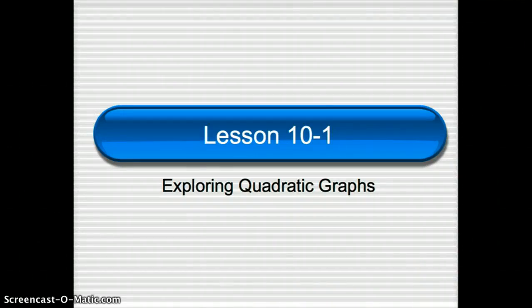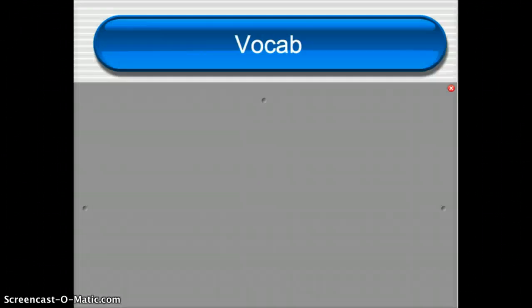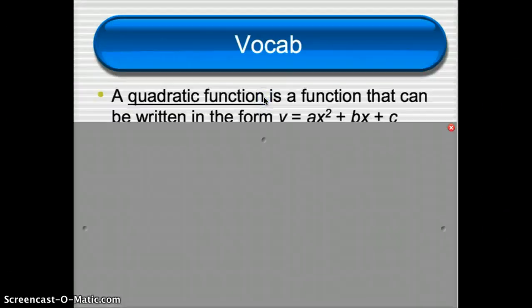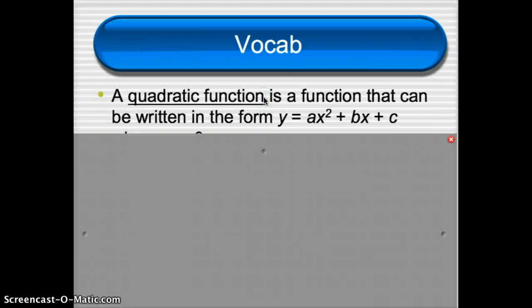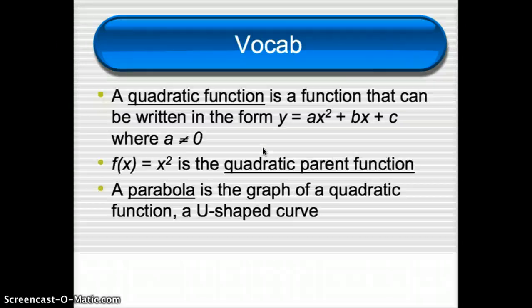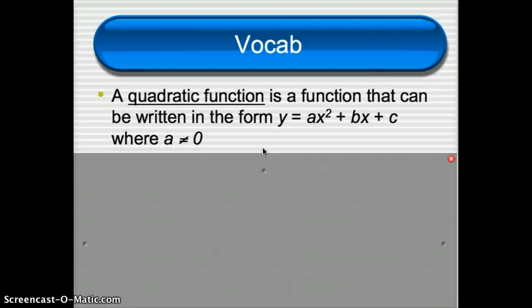Today we will be focusing on exploring quadratic graphs. Before we start, we need to look at a little bit of vocabulary. What does it mean if something's quadratic? A quadratic function is any function that you can write in the form y equals ax squared plus bx plus c. We're having something that has x squared in it.